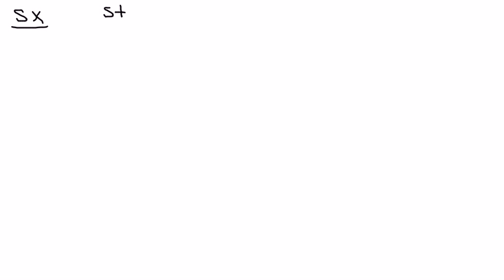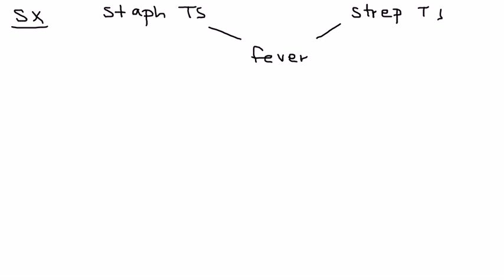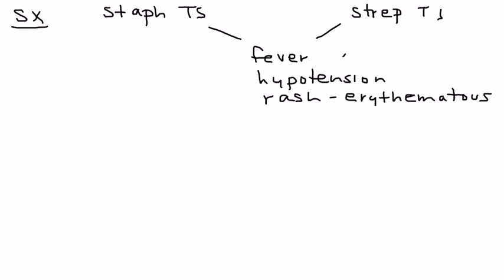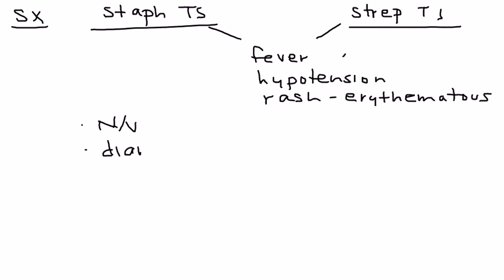Now let's look at symptoms, broken into two categories: Staph Toxic Shock and Strep Toxic Shock. Some symptoms are common to both, such as high fever, low blood pressure, and an erythematous rash. Symptoms specific to Staph include nausea and vomiting, diarrhea, myalgia, and hepatic damage.